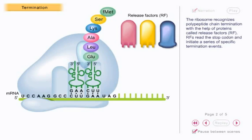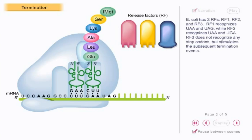RFs read the stop codon and initiate a series of specific termination events. E. coli has three RFs: RF1, RF2, and RF3. RF1 recognizes UAA and UAG, while RF2 recognizes UAA and UGA.